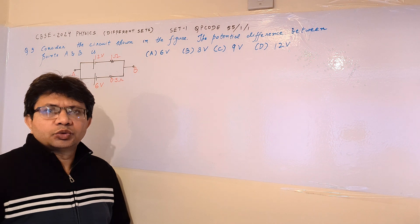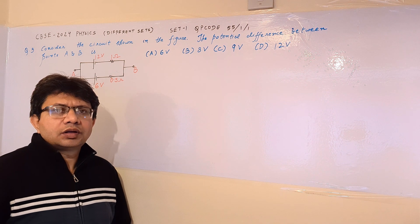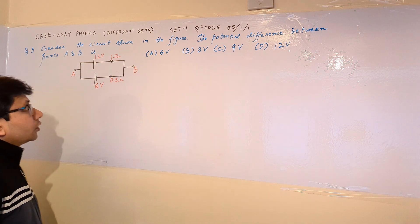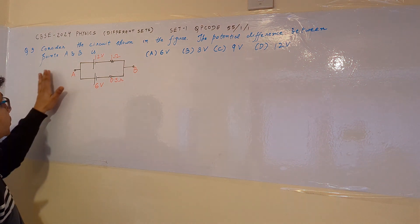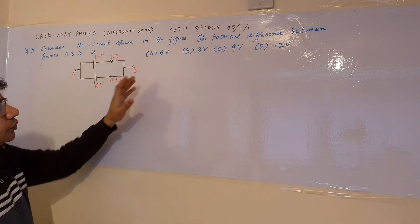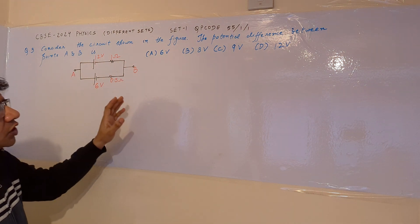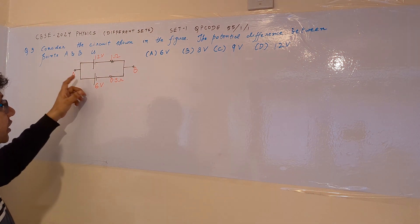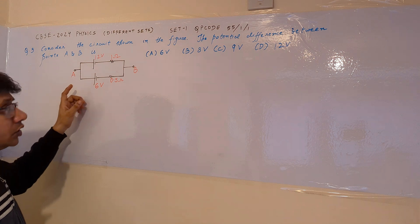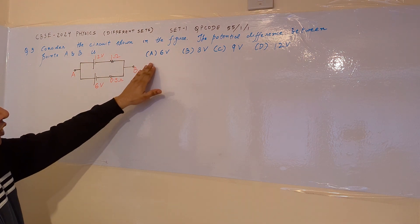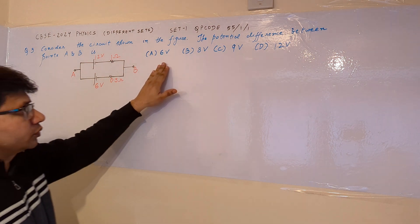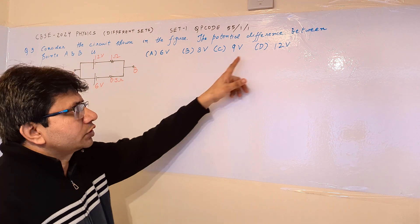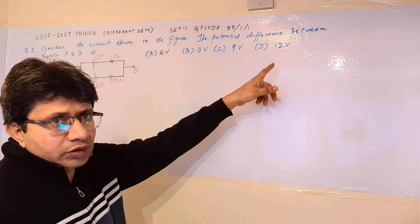Hello students, hope you are doing well. Now I am reading the question: consider the circuit shown in the figure, the potential difference between points A and B is — option A: 6 volts, option B: 8 volts, option C: 9 volts, and option D: 12 volts.